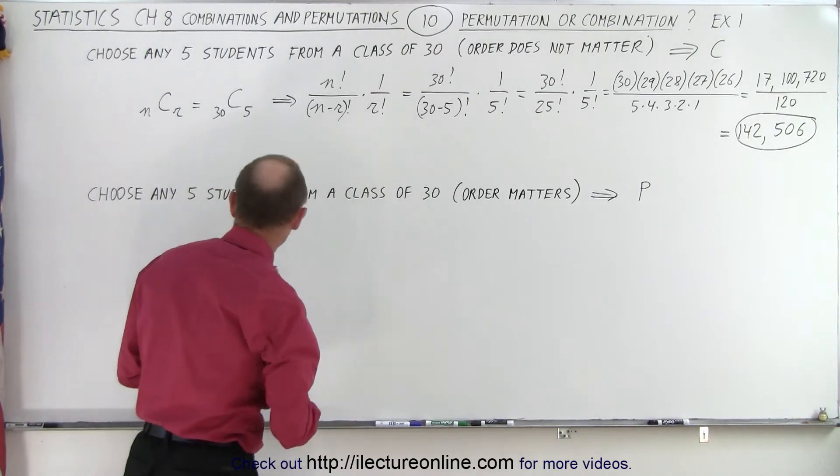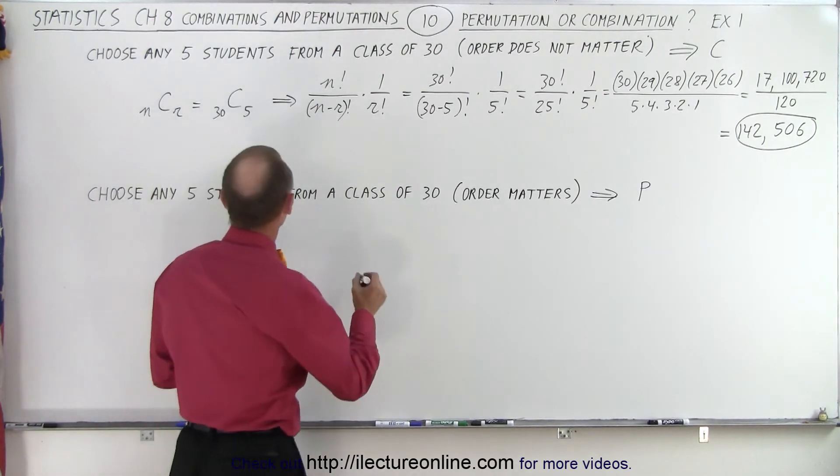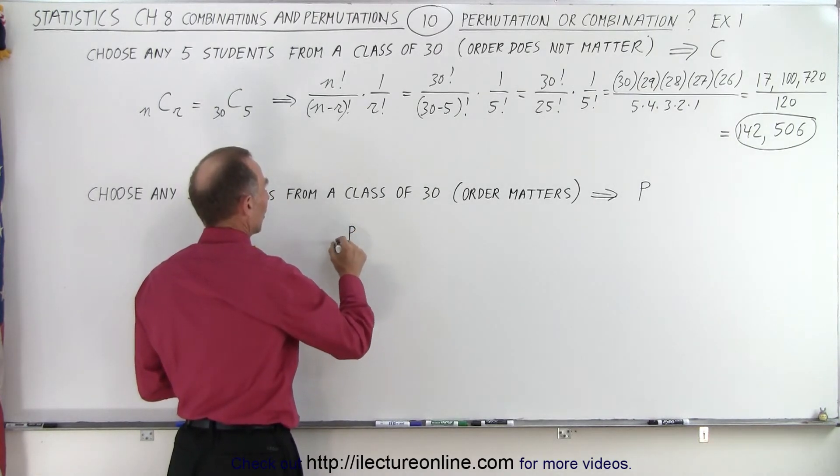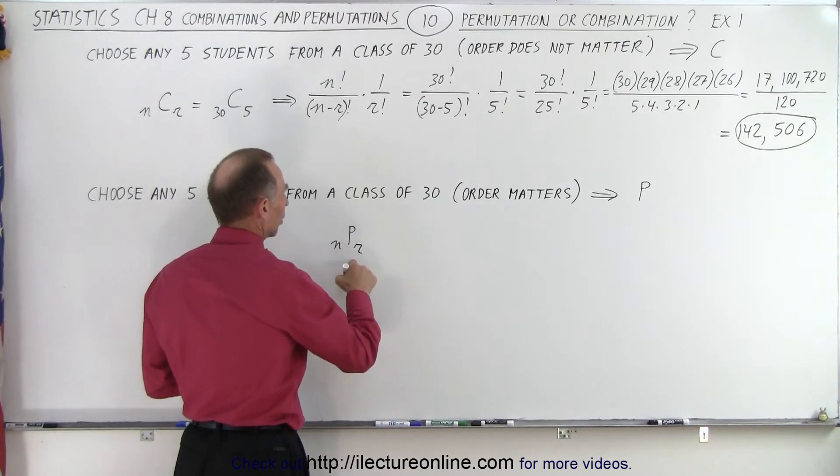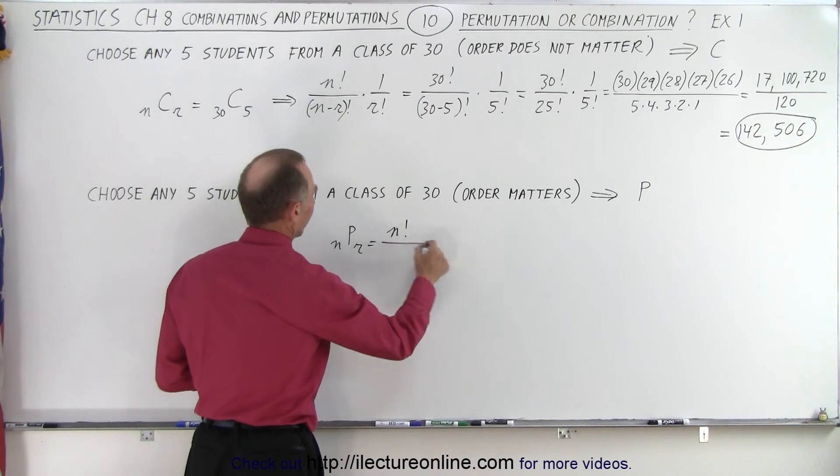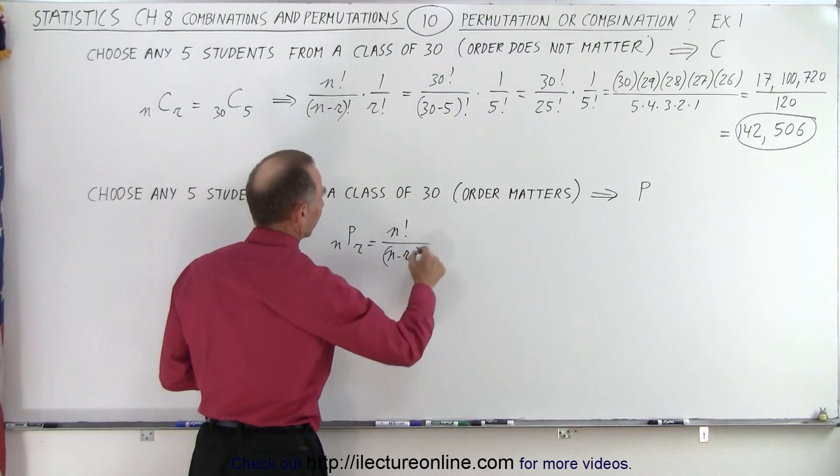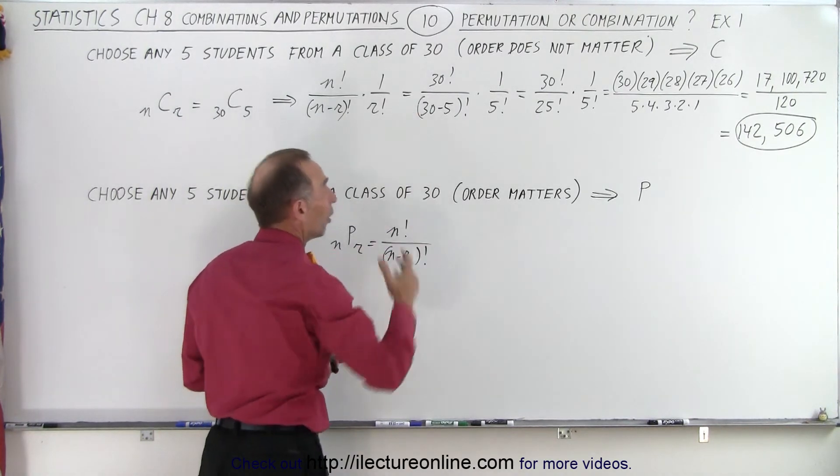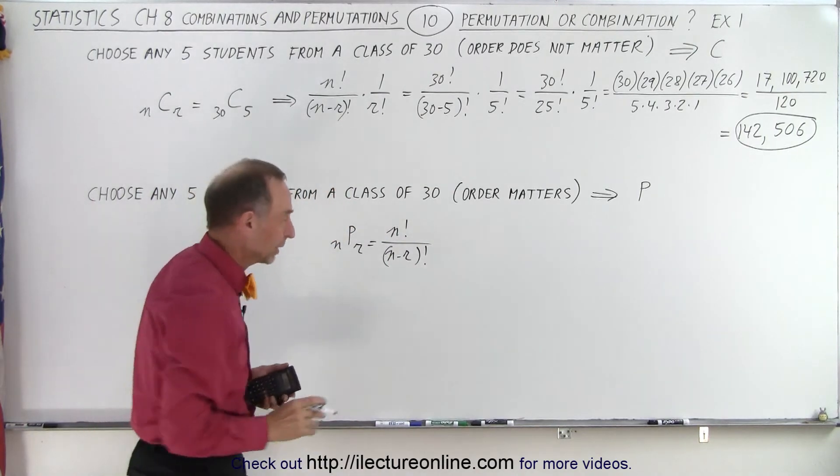Now, if we're looking for permutations when the order does matter, then we can say that the number of permutations when we have N students to choose from and we pick R number of students, so in this case that would be N factorial divided by N minus R factorial. We don't have the 1 over R factorial because we're looking for permutations.